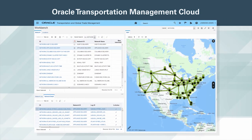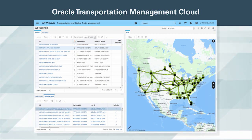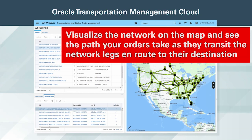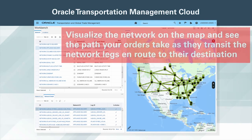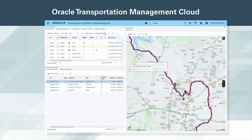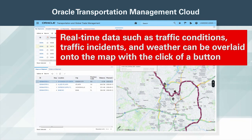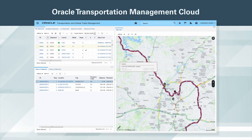Model your transportation network in OTM, then let the application identify the optimal path for your orders to take, depending upon cost and transit time. Visualize the network on the map, and see the path your orders take as they transit the network legs en route to their destination. Real-time data such as traffic conditions, traffic incidents, and weather can be overlaid onto the map with the click of a button, empowering planners and dispatchers to make tactical decisions to help drivers avoid backups and other delays.